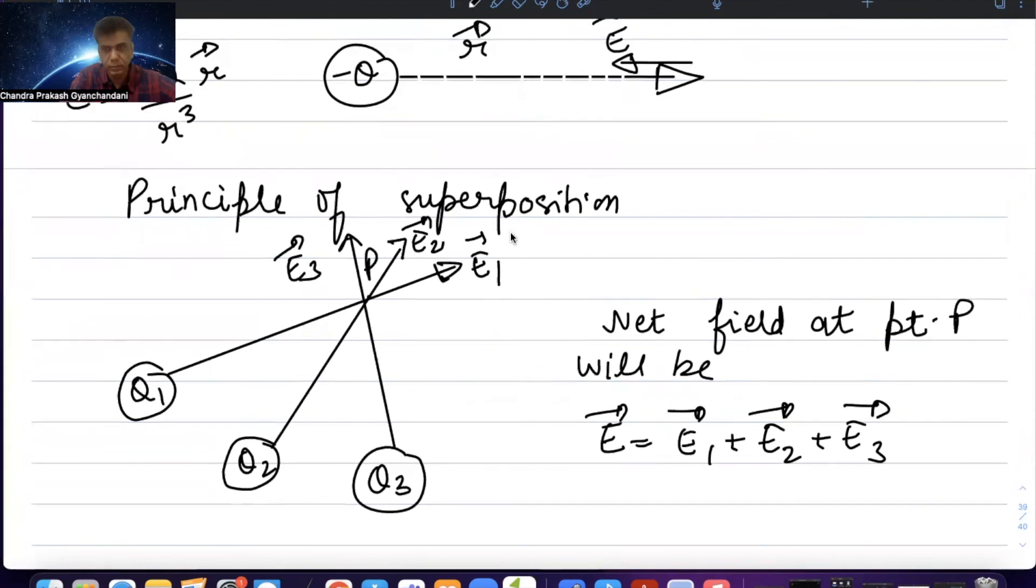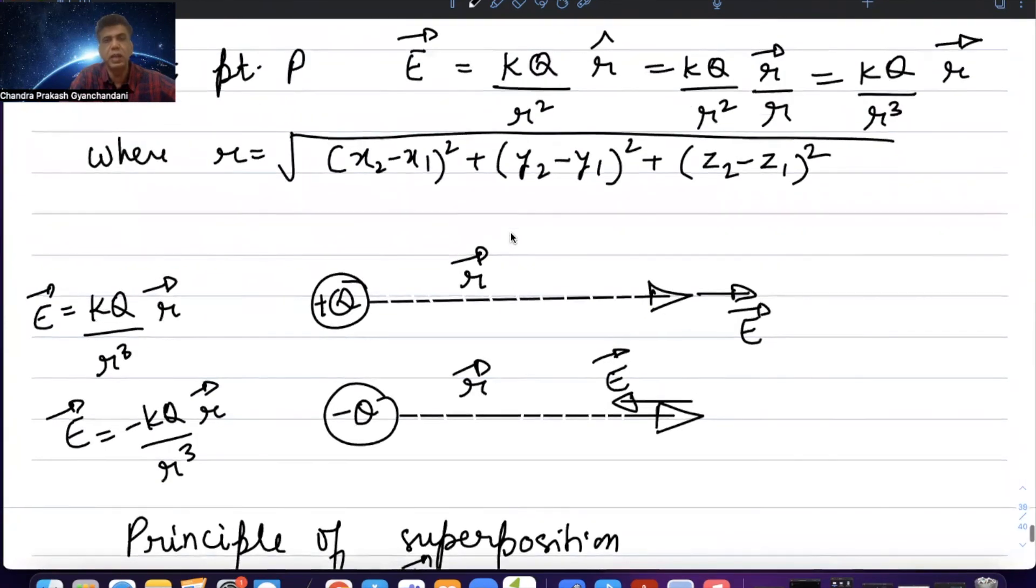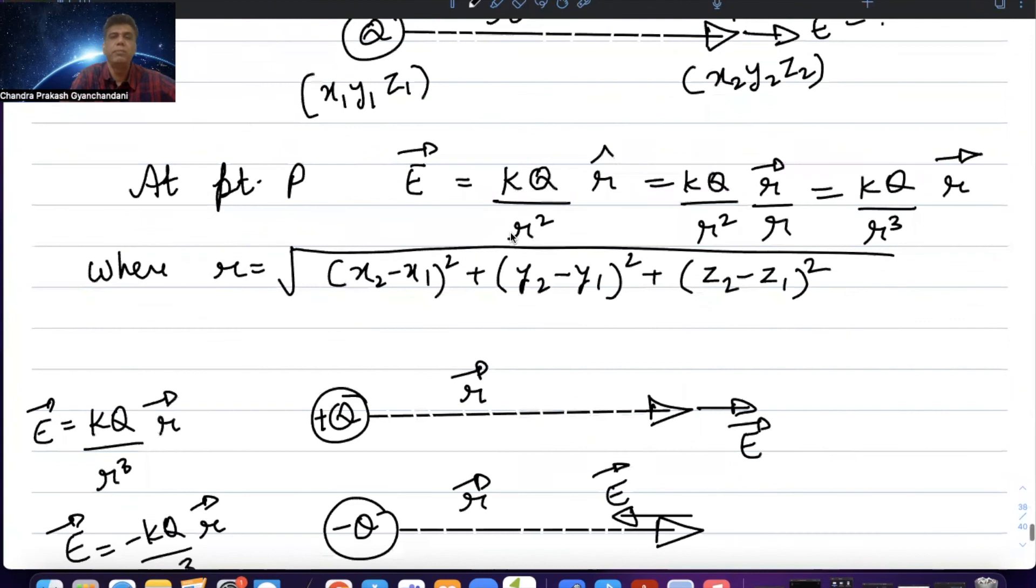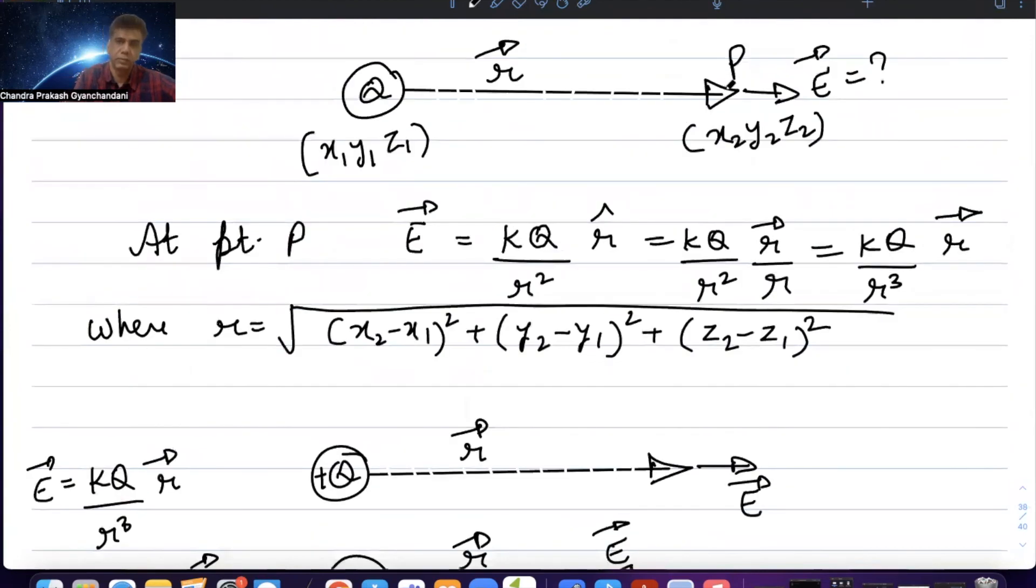The net electric field at point P will be the vector sum. Since k is a constant, we can write it as k times the sum of (Qi over ri squared) r hat i.